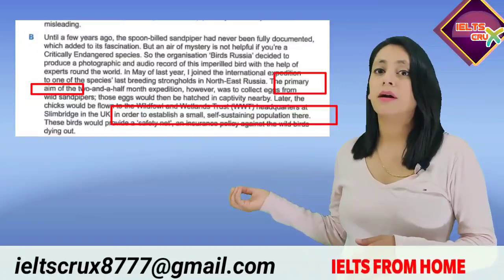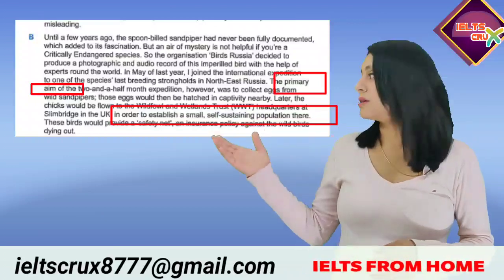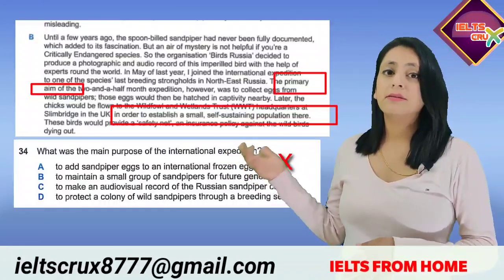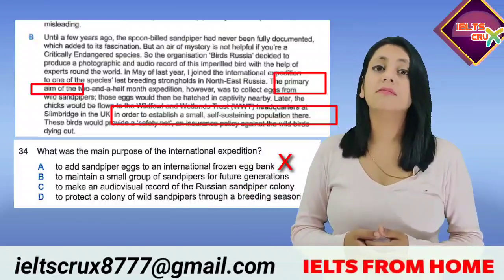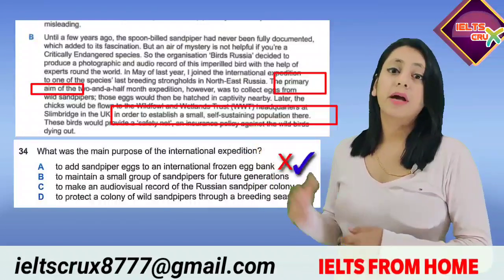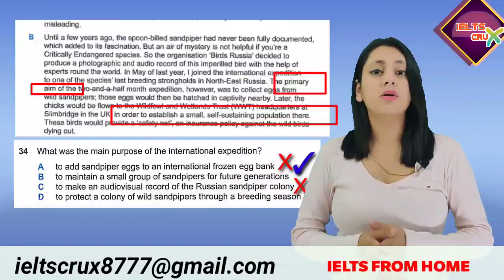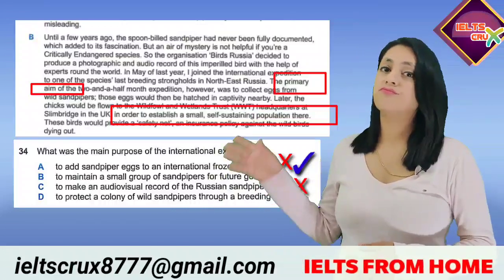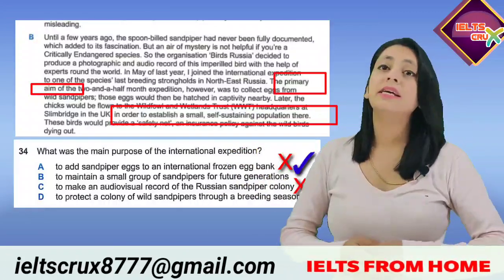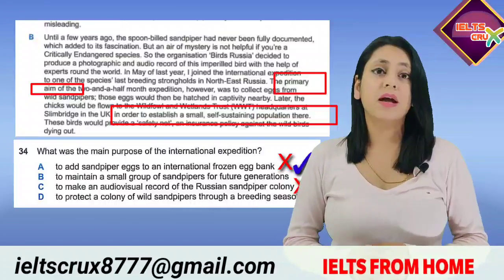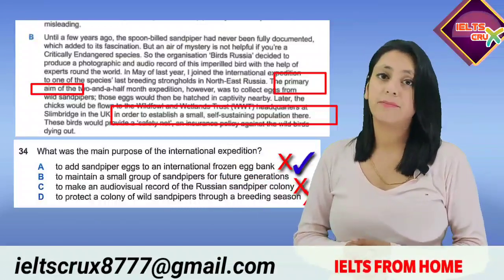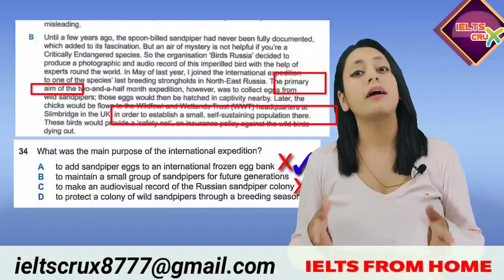Step three: read the identified paragraph and find the keyword synonym. In the sixth line it says: 'The primary aim of the two-and-a-half-month expedition was to collect eggs; the eggs would be hatched in captivity, and later the chicks would be flown to WWT in order to establish a small self-sustaining population there.' The answer is option B: 'to maintain a small group of sandpiper for future generations,' which paraphrases the passage line about establishing a self-sustaining population. This confirms how synonyms and paraphrasing help crack MCQ answers.